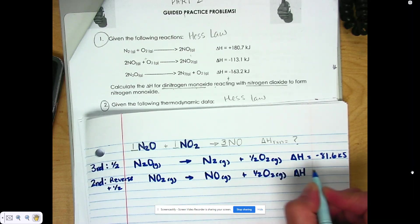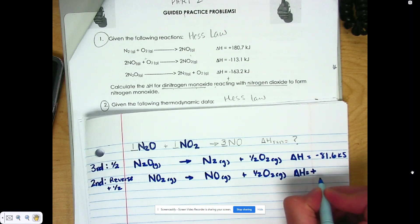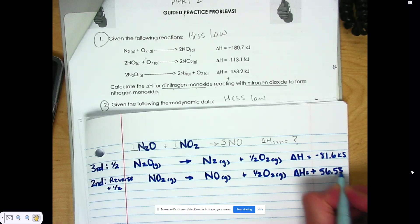My delta H also flips. The negative now turns into a positive, and I divide that by two as well, and I get 56.55 kilojoules.